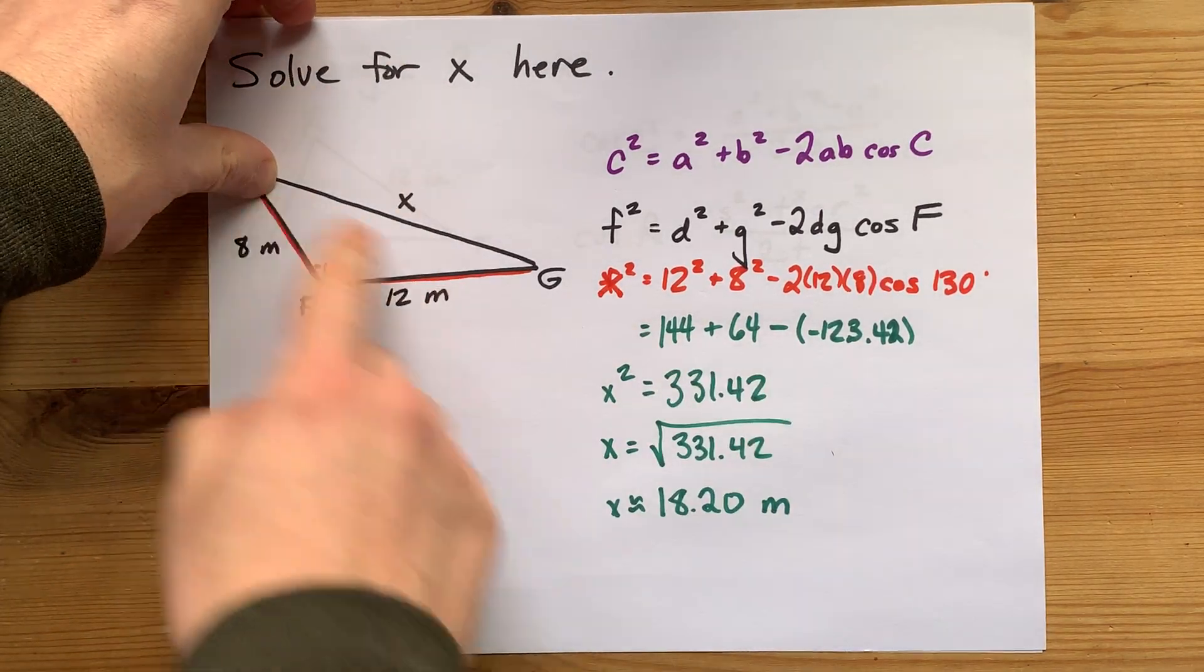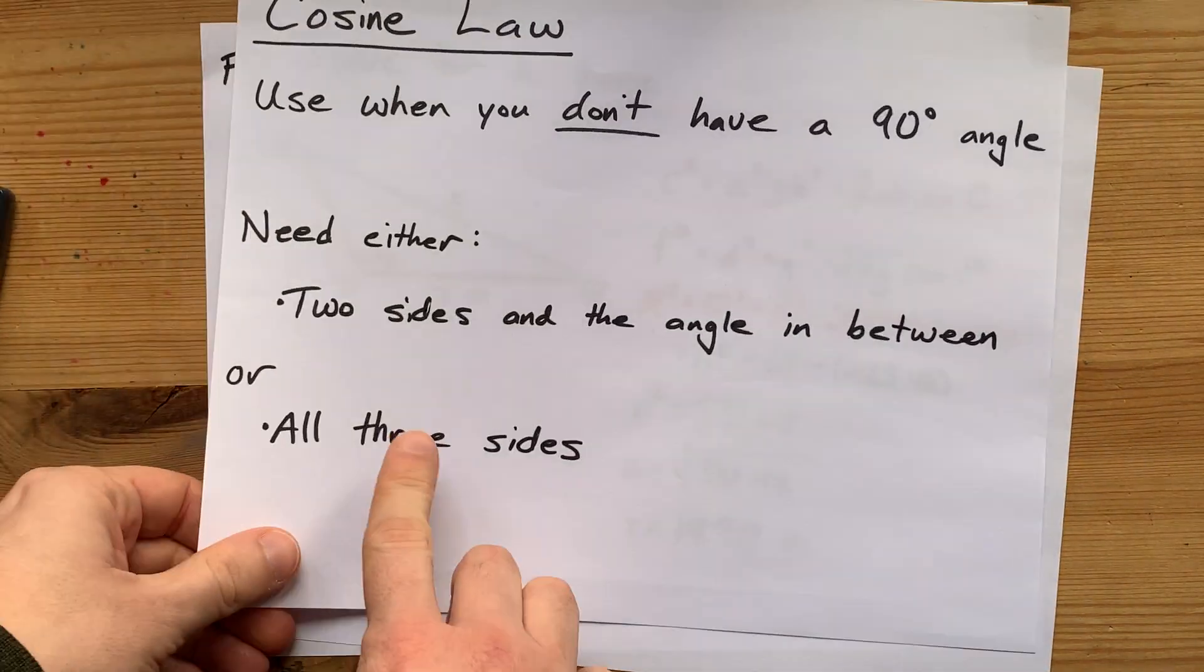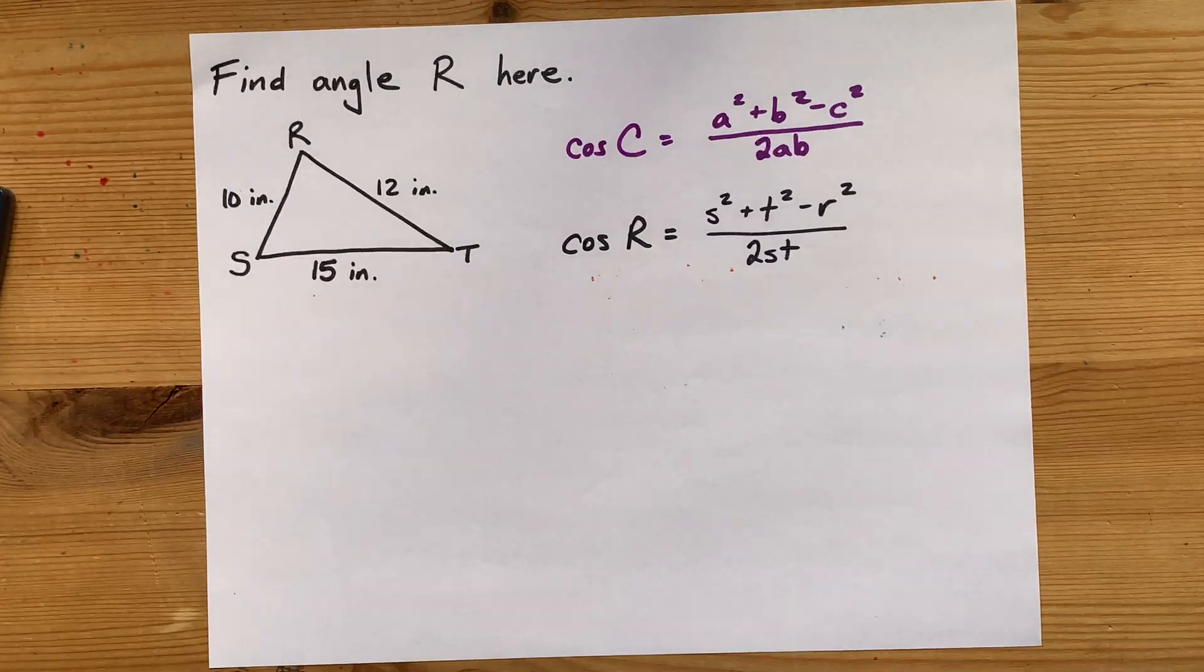Now that's how you're going to use cosine law to solve for a side length. Remember, you can also use cosine law if you're given all three sides. That's the example that I've rigged for you here.